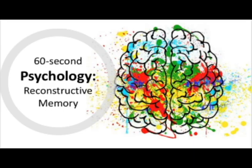So through reconstructive memory, when we try to recall something, we search for relevant information in our schema to piece the memory back together. This often results in errors in our memory, which support the idea that it's reconstructed rather than replayed.